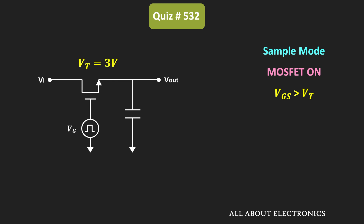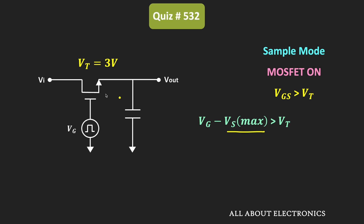For the given MOSFET, when VG - VS is more than 3V, the MOSFET will remain in the ON condition. To find the minimum value of the gate voltage, we should consider the maximum value of the source voltage, which will be the same as the maximum value of the input voltage. During a previous hold mode, the voltage at the source terminal could equal Vi_max.